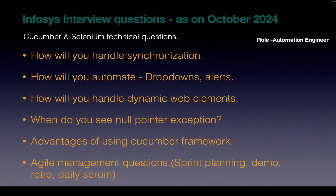How will you handle synchronization? We can use implicit wait and explicit wait to handle synchronization, and you can explain about when to use implicit versus explicit wait. How will you automate dropdowns and alerts? For automating dropdowns, we use the Select package, and for alerts, we use switchTo() methods. How will you handle dynamic web elements? Using absolute XPath, we can handle dynamic web elements.